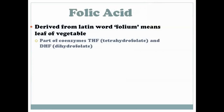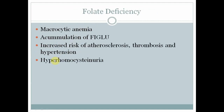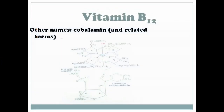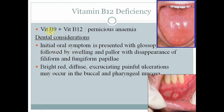Folic acid, meaning leaf of vegetable, when deficient causes defective absorption and hemolytic anemia, leading to macrocytic anemia and increased risk of atherosclerosis and hyperhomocysteinuria. Vitamin B12, cyanocobalamin — nutritional deficiency is seen in elderly people, those with gastrectomy, and fish tapeworm infection. B9 and B12 deficiencies cause pernicious anemia. Initial oral symptoms include glossitis followed by swelling, discoloration, disappearance of filiform and fungiform papillae, then bright red, diffuse, excruciating painful ulcers.